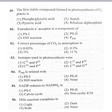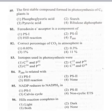83rd question: isotopes used in photosynthesis were — option 1 C11 and P32, option 2 C15 and P32, option 3 C16 and P15, option 4 C14 and O18. Isotopes are atoms having the same atomic number but different mass number — same number of protons but different number of neutrons.